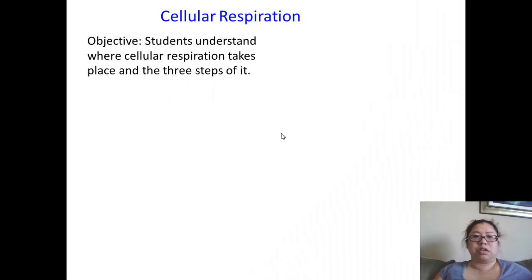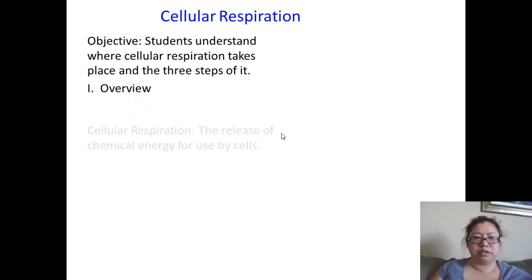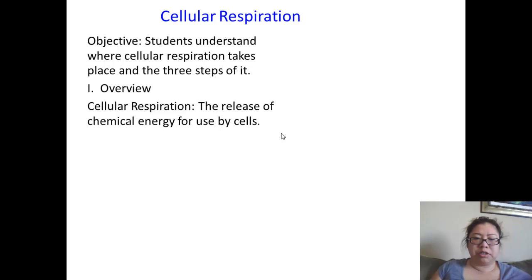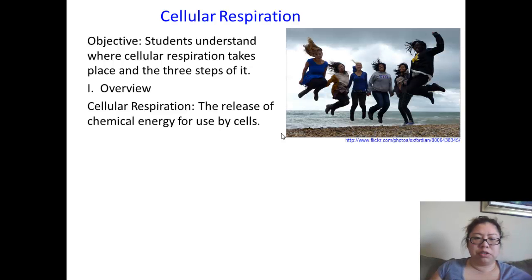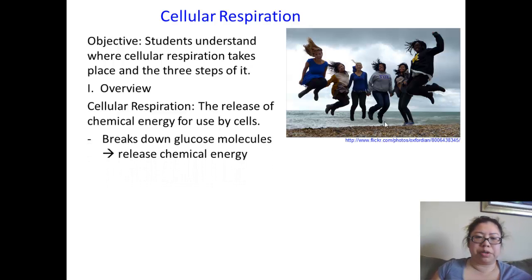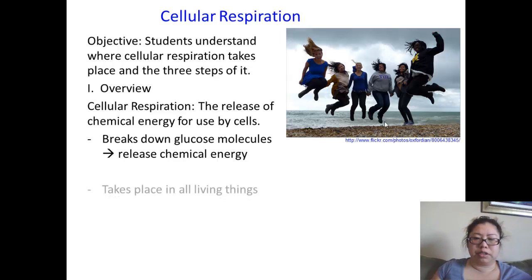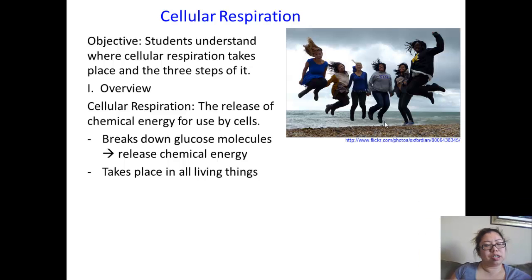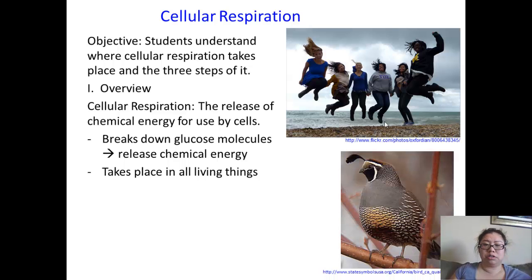The objective here is that students understand where cellular respiration takes place and the three steps of it. Cell respiration is the release of chemical energy used by cells. Like us here — humans — we are heterotrophs. We have to take in food in order to use chemical energy. We break the food down into simple molecules of glucose and release it as chemical energy. This applies not just in heterotrophs, but also in birds, insects, and plants as well.